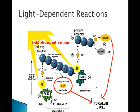Light-dependent reactions really focus on making three things: ATP, NADPH, and oxygen.